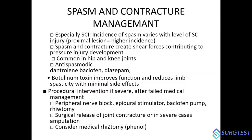For spasm and contracture management in spinal cord injury patients, incidence of spasm varies with level of injury — more proximal lesions carry higher risk. Contracture and spasm create shear forces contributing to pressure injury, commonly at the hip and knee joints. Anti-spasmodics such as dantrolene, baclofen, or diazepam can be given. Botulinum toxin is a temporary solution requiring repeat every 3 to 6 months. Procedural options include peripheral nerve block, epidural stimulator, baclofen pump, or rhizotomy. For contracture, joint release or even amputation may be required.